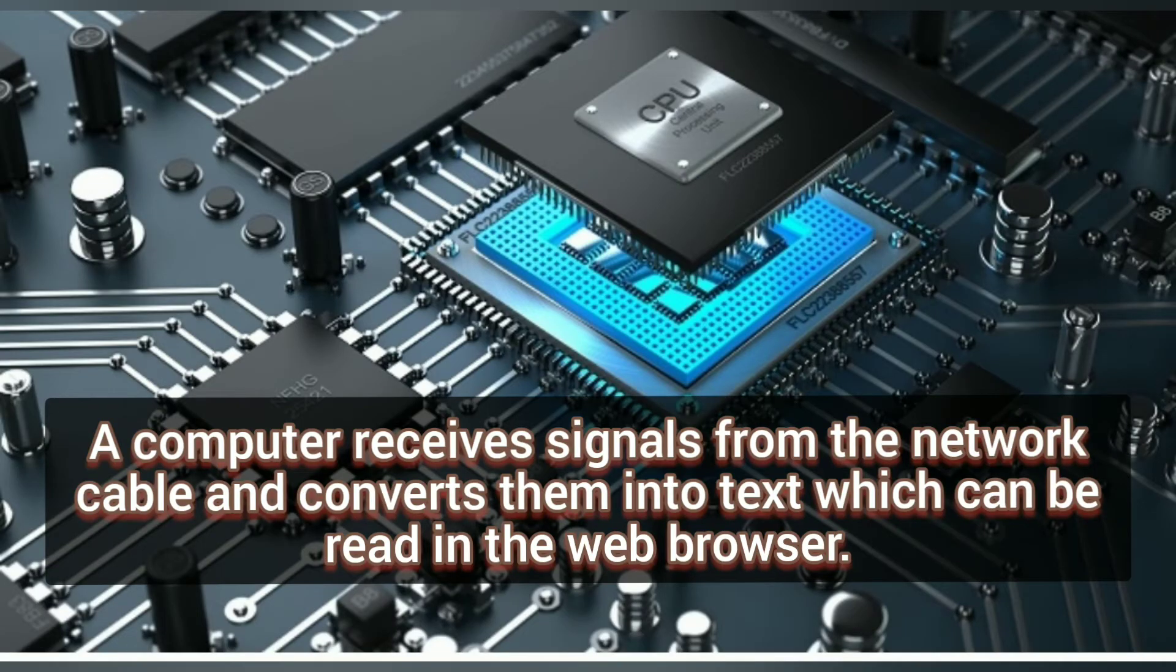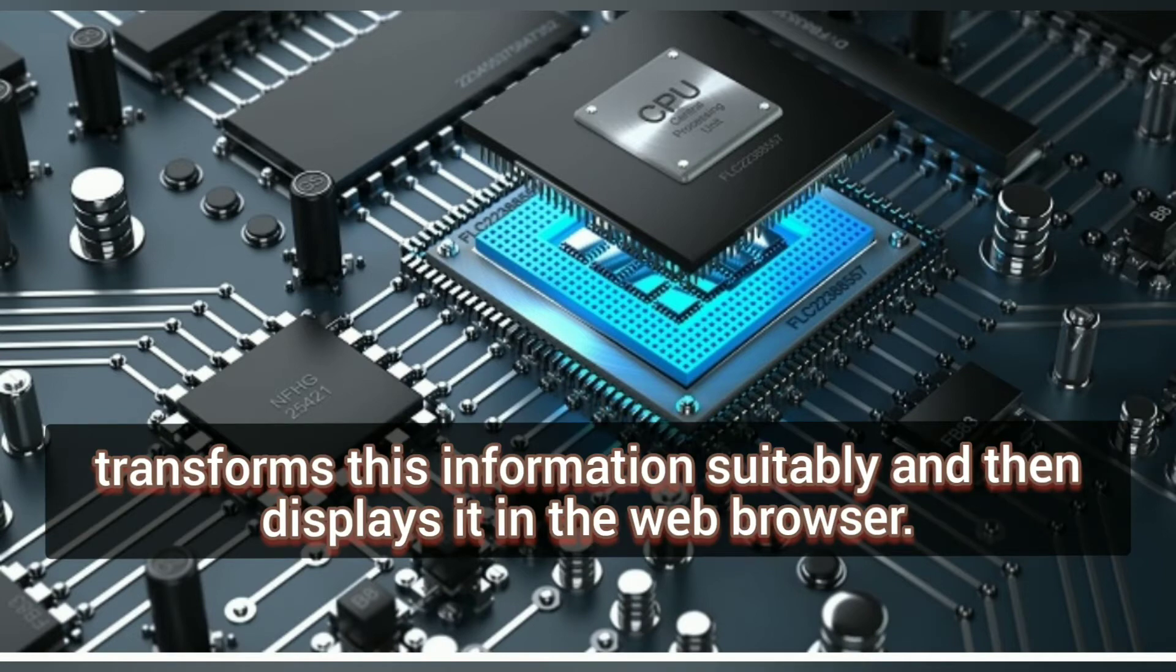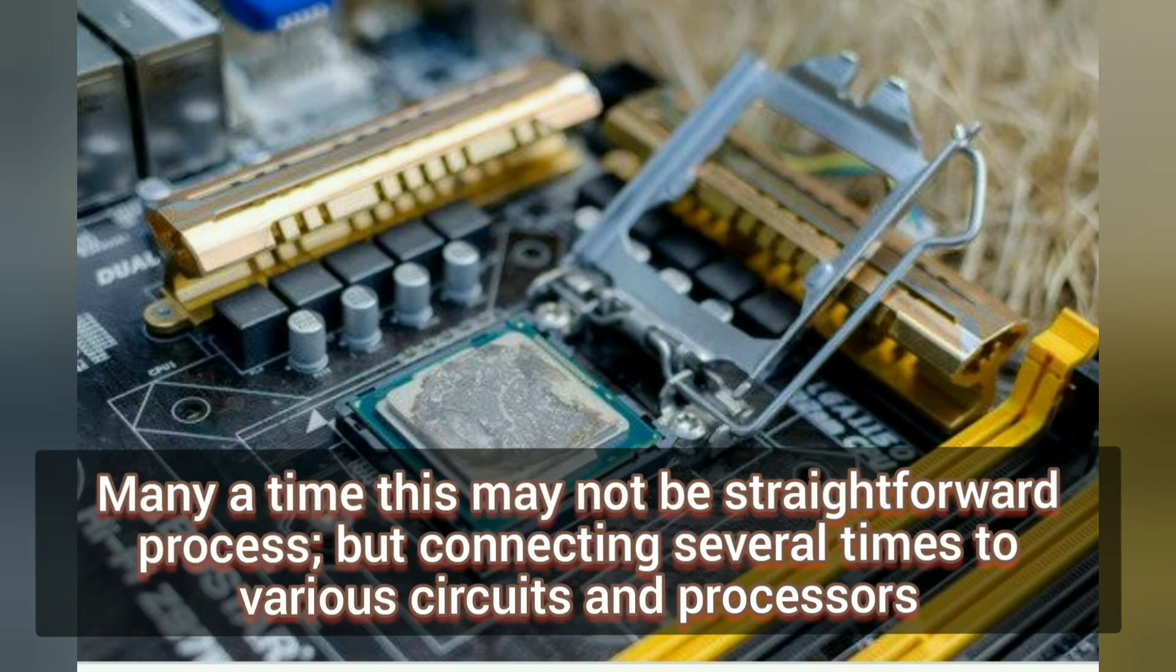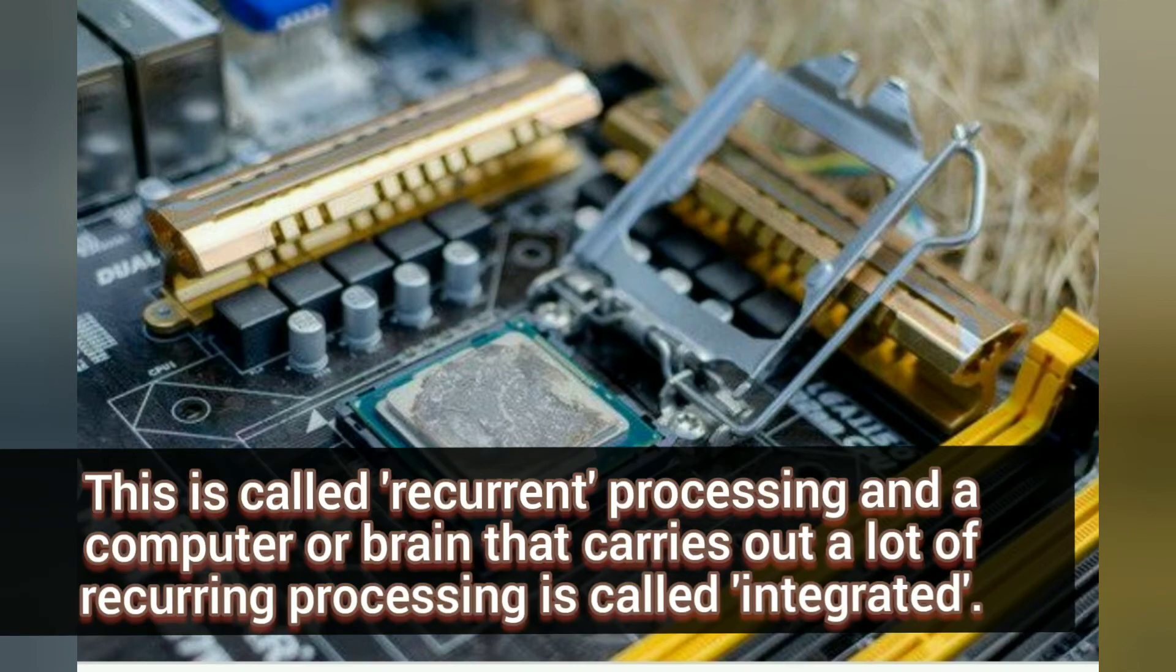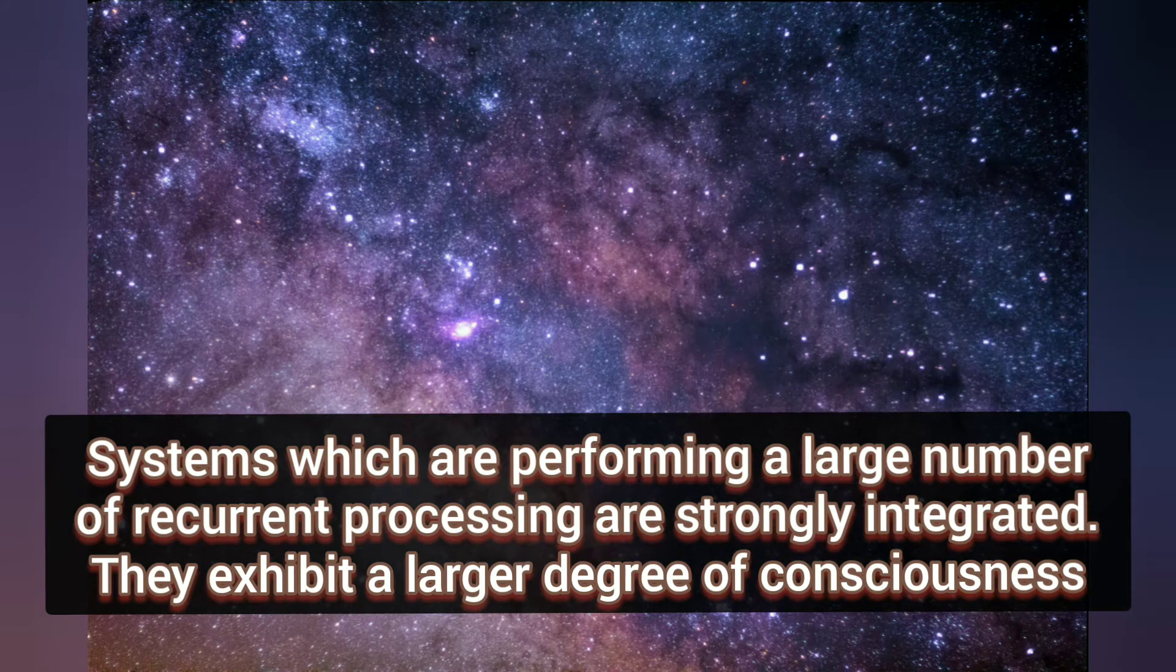A computer receives signals from the network cable and converts them into text which can be read in web browser. Or rather we can say that the computer receives information from the cables, transforms this information suitably, and then displays it in the web browser. Many times this may not be a straightforward process but connecting several times to various circuits and processes. This is called recurrent processing, and a computer or brain that carries out a lot of recurrent processing is called integrated. Systems which are performing a large number of recurrent processing are strongly integrated.